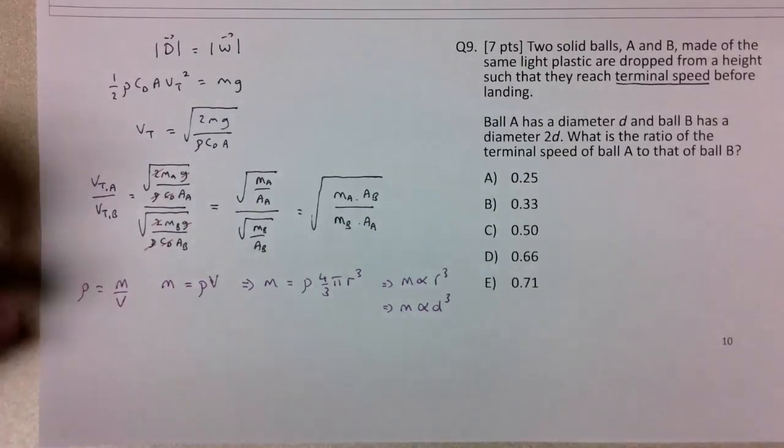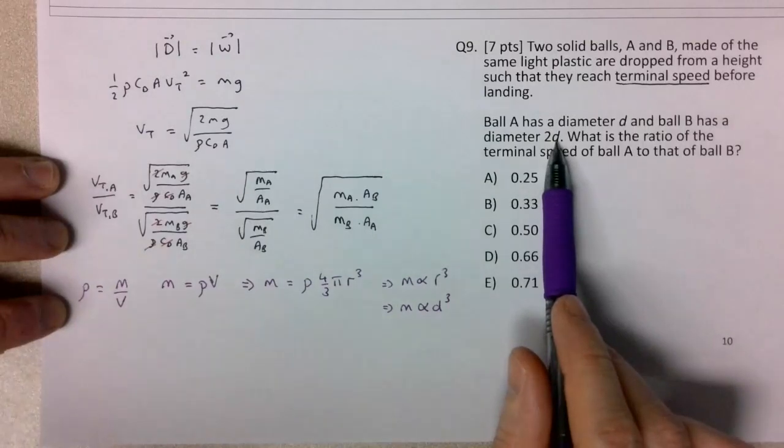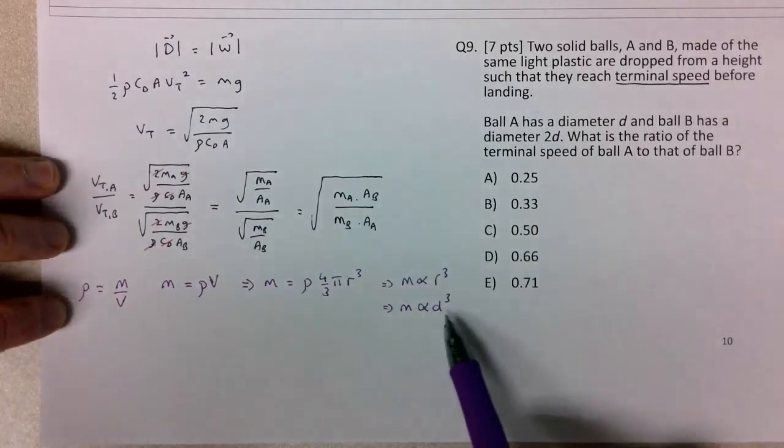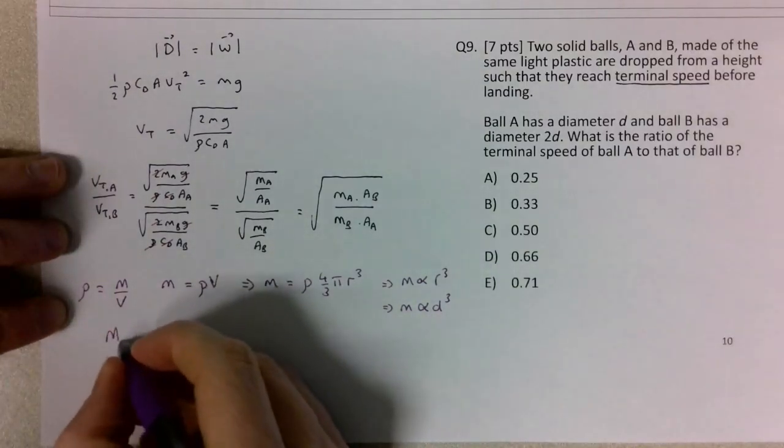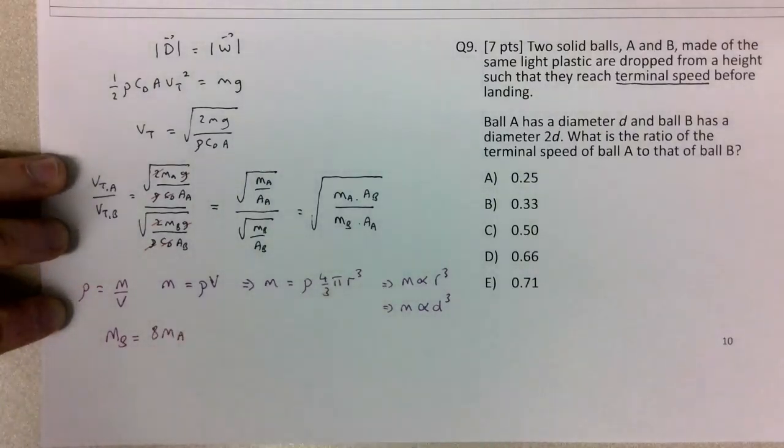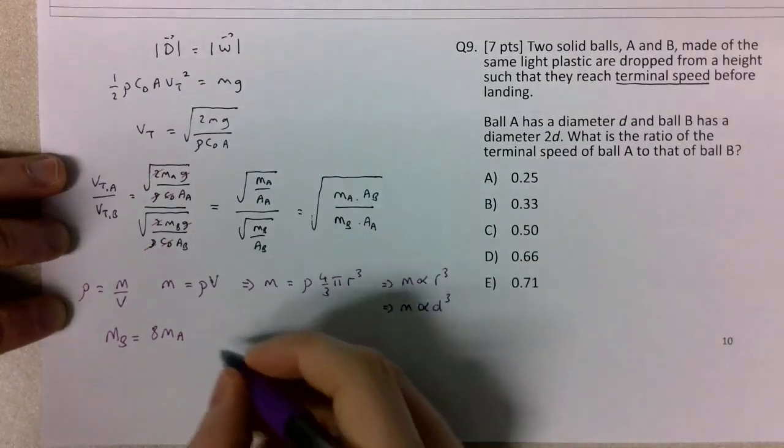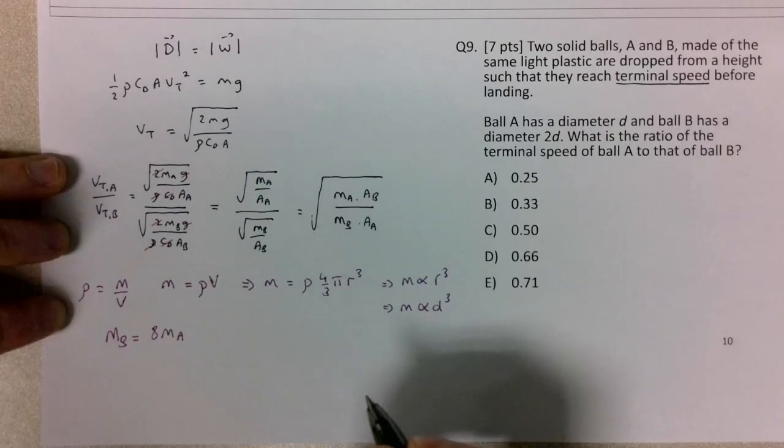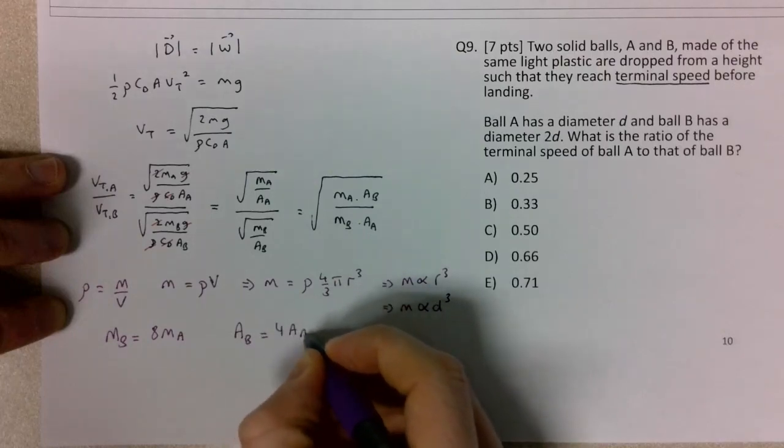If ball B has twice the diameter of ball A, it will have 2³ = 8 times the mass of A. So m_B = 8m_A. The cross-sectional area of these balls is the area of a circle.